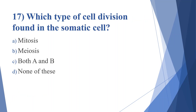Seventeenth question: which type of cell division is found in the somatic cell? Option A: mitosis. Option B: meiosis. Option C: both A and B. Option D: none of these. Answer is option A, mitosis.